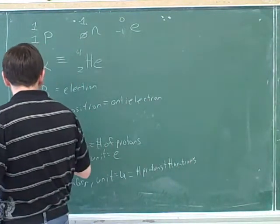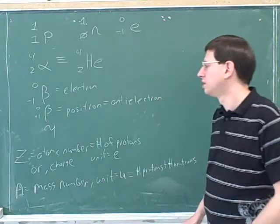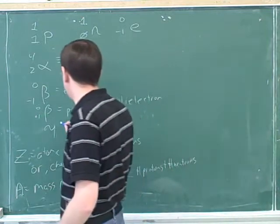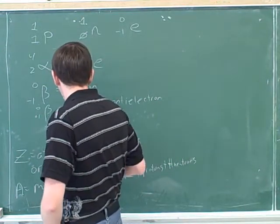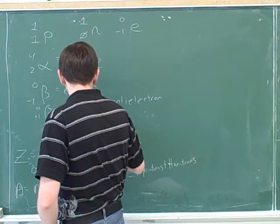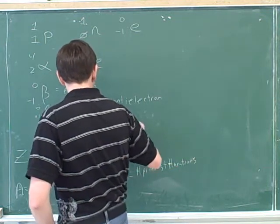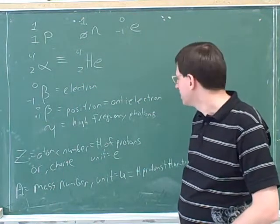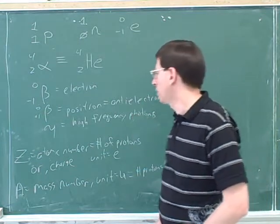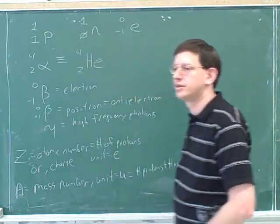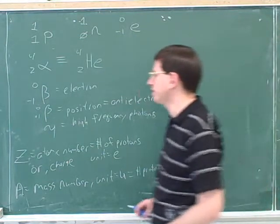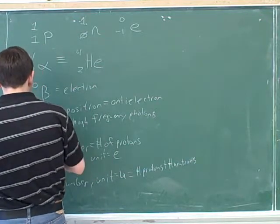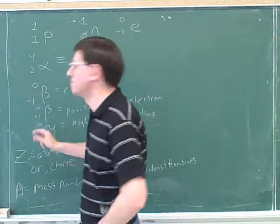Then there are gamma particles. Gamma particles turn out to be high-frequency photons — high-frequency electromagnetic waves. What would be the correct A and Z for a gamma particle? Both are zero. Photons literally have no mass and literally have no charge, so these are not approximations. A gamma particle has A = 0 and Z = 0.